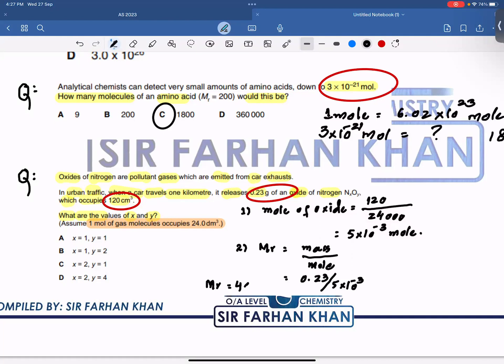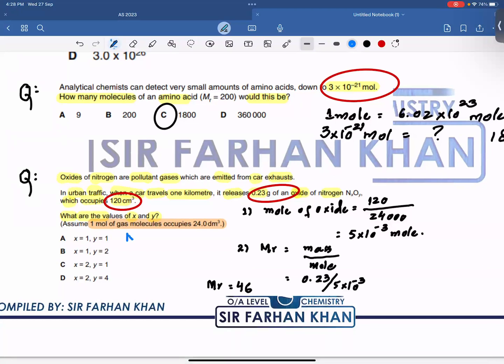So mujhe aur aapko abhi yeh dekhna hai ke 46 kis option ke andar hai. If I have x value and y value to 1, then NO will be molecular formula, right? And this NO will be how much? 30. So we need 46. This option is going to be incorrect. If I have x value to 1 and y value to 2, then formula will be NO₂. And let's check that this MR will be how much it will be. So obviously, D is going to be the right answer.